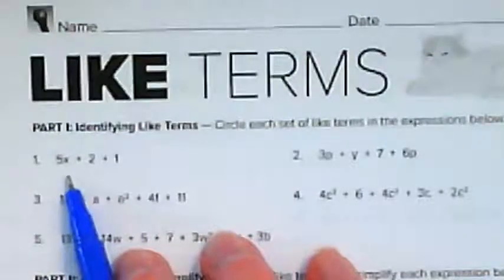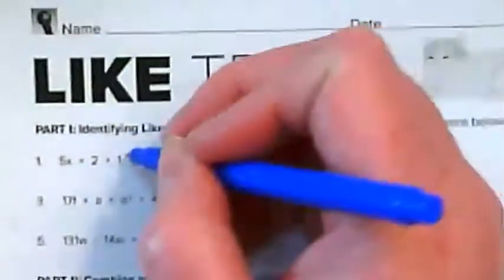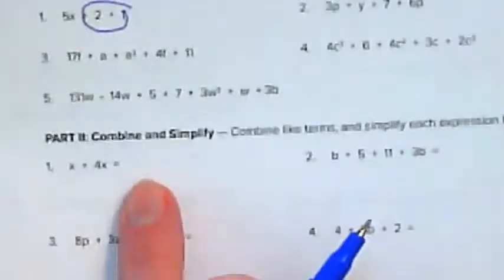5x plus 2 plus 1. There's only one term with an x, and that's 5, and 2 plus 1. Notice the directions here just say identifying like terms. Circle each set of like terms in the expression below. These are like terms. This is not, so it stays the same. Down here is where we're going to actually combine them.